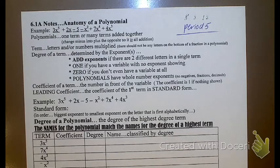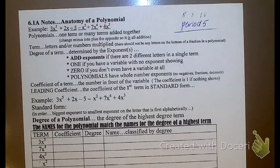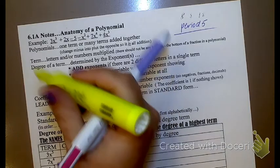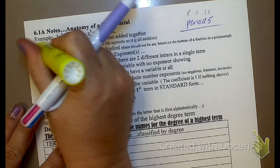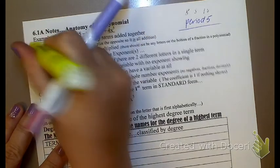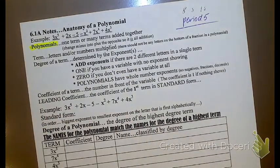So we're going to talk about the anatomy of a polynomial. What's a polynomial? What does 'poly' mean? Many. What does 'nomial' mean? It means numbers or terms. So a polynomial is something that has a lot of numbers or a lot of terms with it.